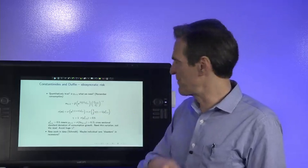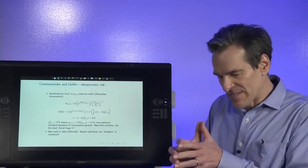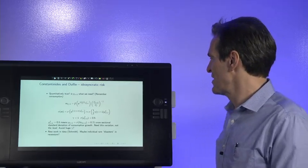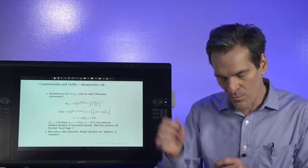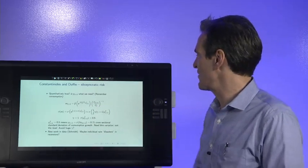So a first round of empirical work said it's there—recessions are cross-sectionally more risky. Not enough. You still need high risk aversion. A new round of work and data is looking at rare disasters. Maybe the few people who really suffer in recessions account for this cross-sectional variance of consumption growth.